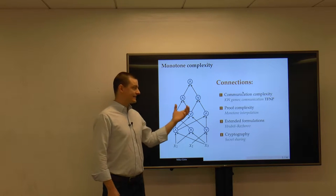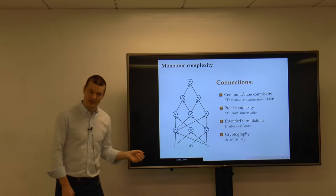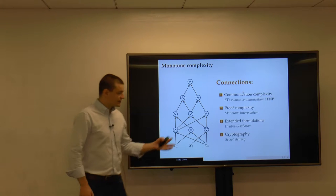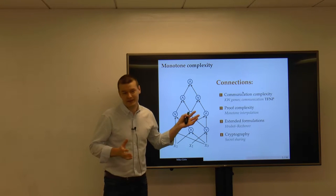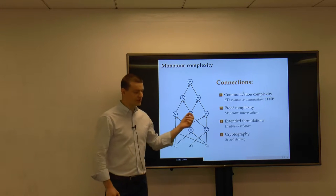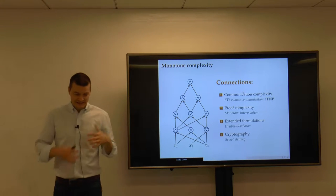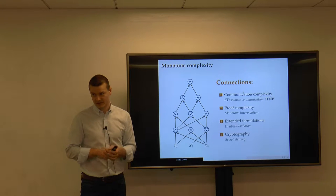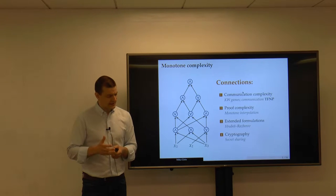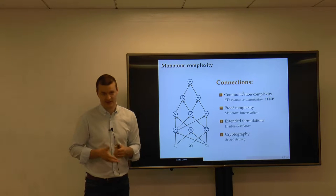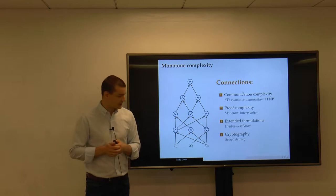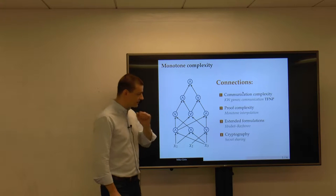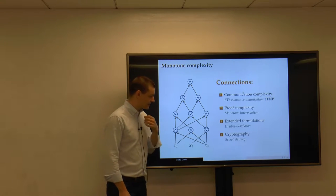I'll talk extensively about how you can view monotone computations in the language of communication complexity — that was the topic of my thesis. There are connections to proof complexity: there are old ones from the 90s, something called monotone feasible interpolation, a technique that allows you to derive lower bounds for monotone circuits and translate them into lower bounds in propositional proof complexity. This technique still gives the best lower bounds we have for cutting planes. There are also connections to linear or semi-definite extension complexity and cryptography.